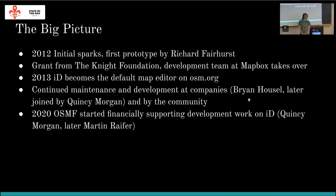About 10 years ago, a guy named Richard wrote a blog post on the OSM blog showcasing a prototype that he wrote and called 'iD' — an editor for OpenStreetMap data written in JavaScript. Those were the first initial sparks of the iD project. Shortly after, thanks to a grant from the Knight Foundation, the development team at Mapbox took over development of the editor.